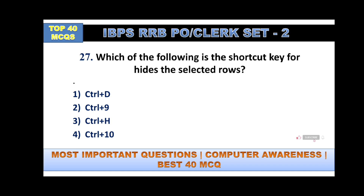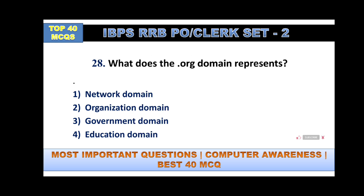What is the shortcut key for hiding selected rows? The answer is Ctrl+9. We use Ctrl+D to open another desktop. What does the .org domain represent? Dot org means an organization domain. For network domain we use .net, for government domain .gov, and for education domain we use .edu.